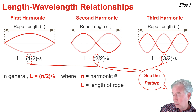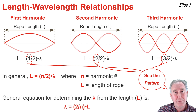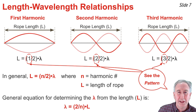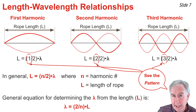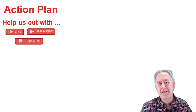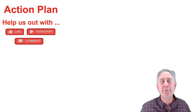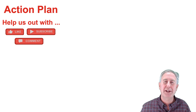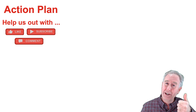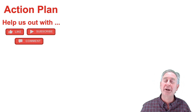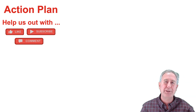If I rearrange this equation, I can generate an equation for calculating wavelength from length and harmonic number: wavelength equals two divided by the harmonic number, multiplied by the length of the rope. At this point in every video I like to help you out with an action plan — a series of next steps for making the learning stick. But before I help you out, could you help us out by giving us a like, subscribing to the channel, or leaving a question or comment in the comment section below.